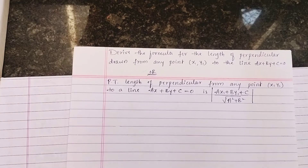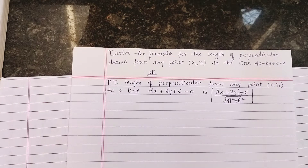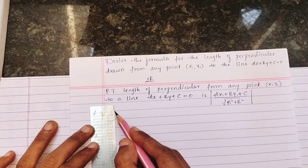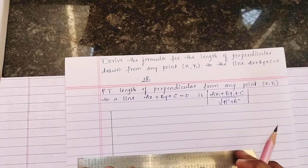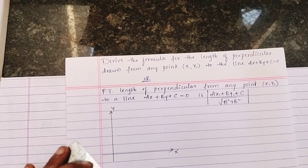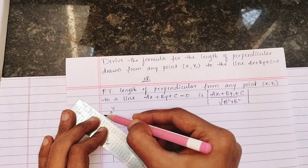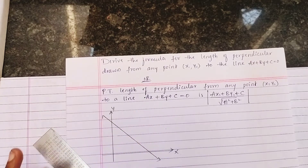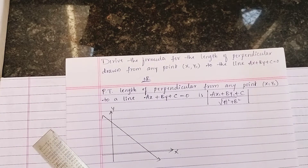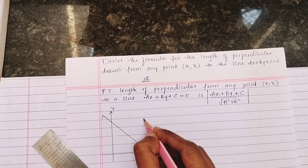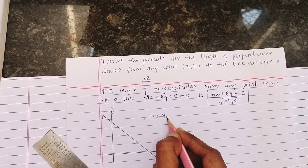Let's begin the derivation by drawing the diagram. We'll consider first the axes — I will draw x and y axes here. This is the x-axis and y-axis. I will draw a line here which will cross both x and y axes. This is the line ax + by + c = 0. We are finding the perpendicular from any point P of (x₁, y₁).